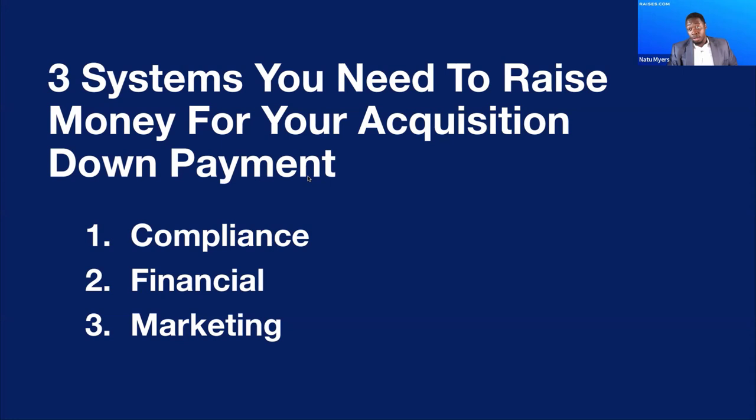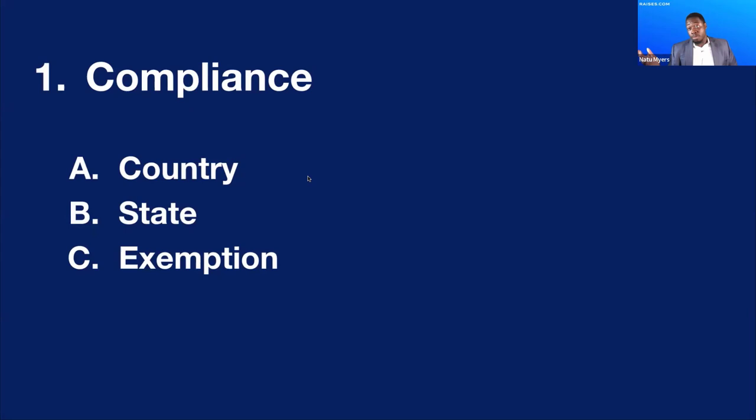First is compliance systems — essentially the legal documents that people need to sell their deal to investors who have the money to invest. Second is the financial piece: what are the numbers? Third is marketing: how do you take somebody from not knowing you to actually saying yes and wiring funds to escrow.